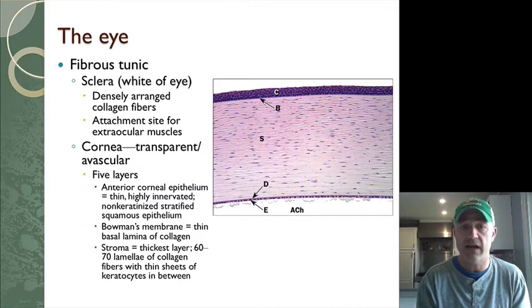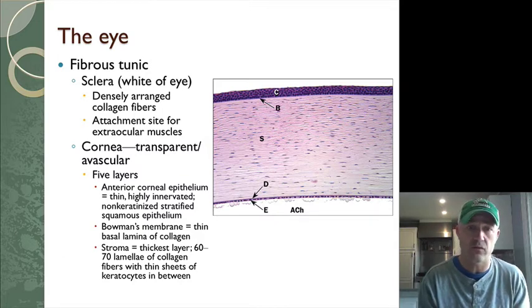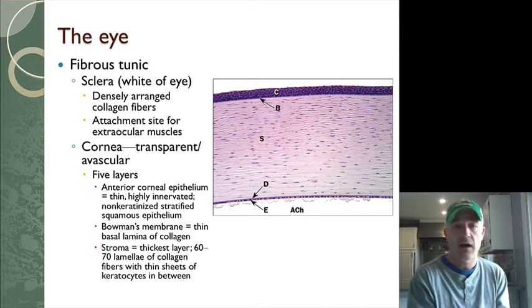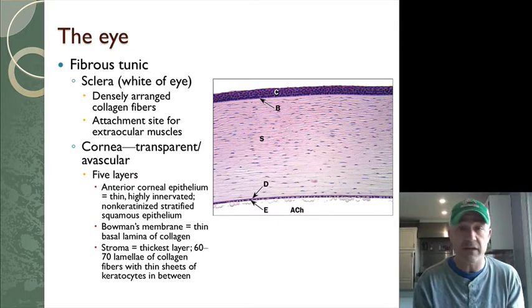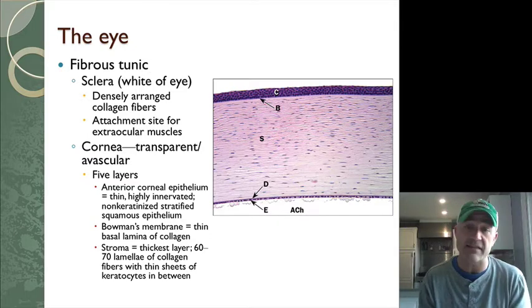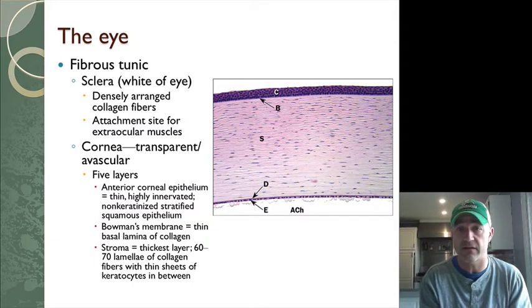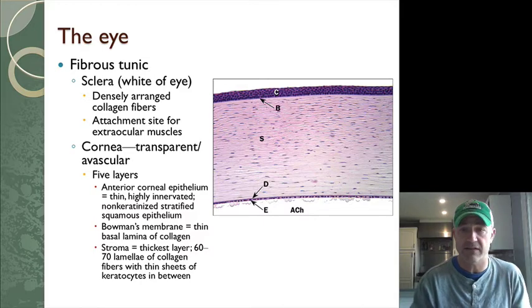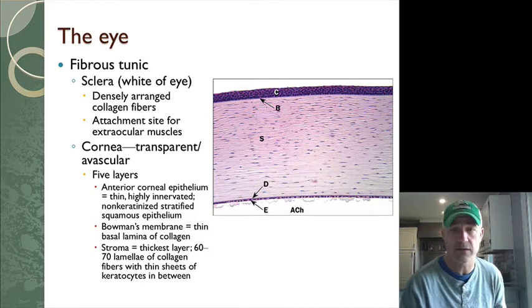The cornea helps bend light into the lens and helps that lens focus it onto the retina. There are multiple layers to this — you can see on the right that there are some distinct layers, but identifying those individually is outside of what I'm expecting you to know.